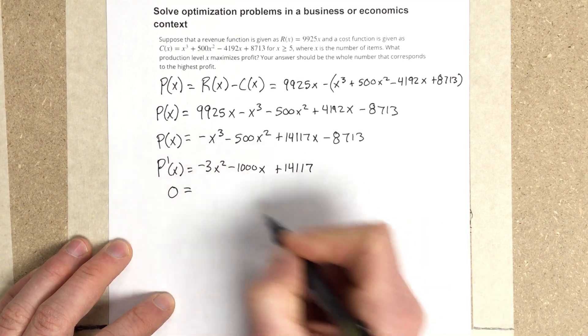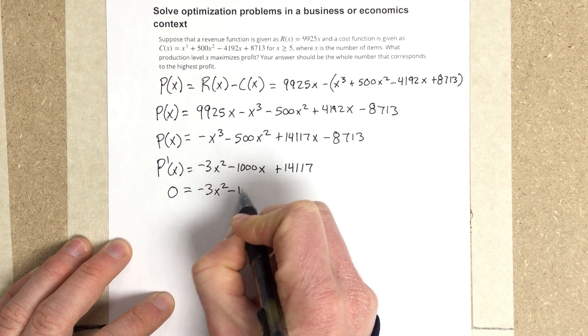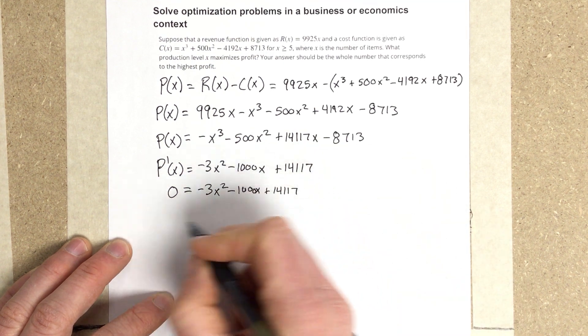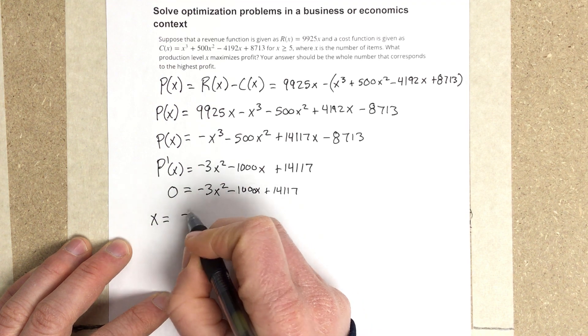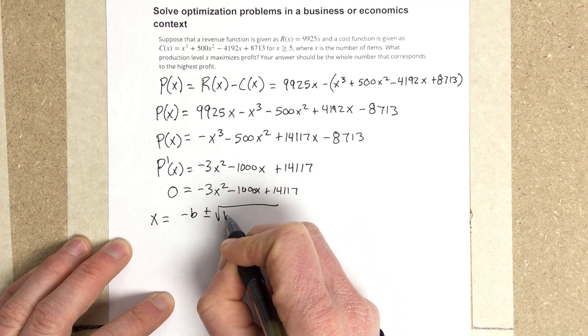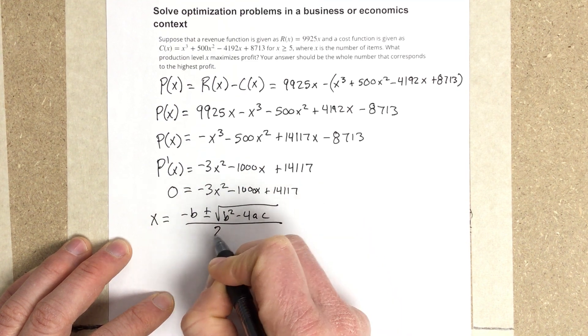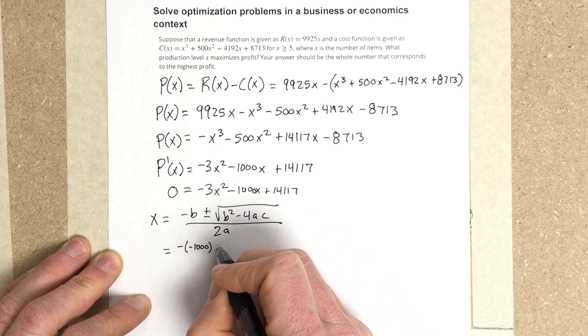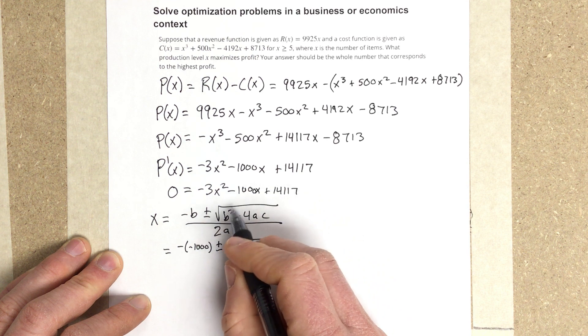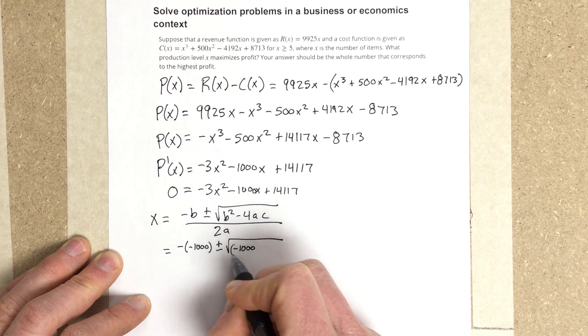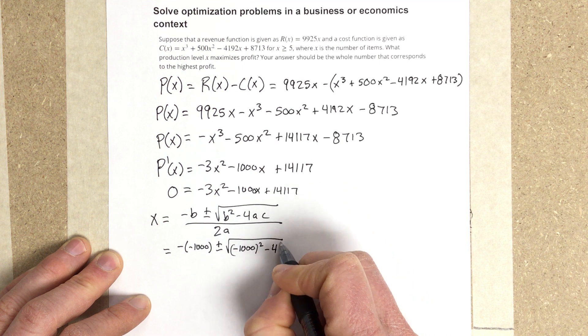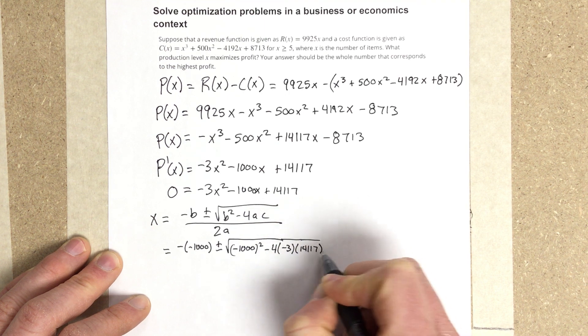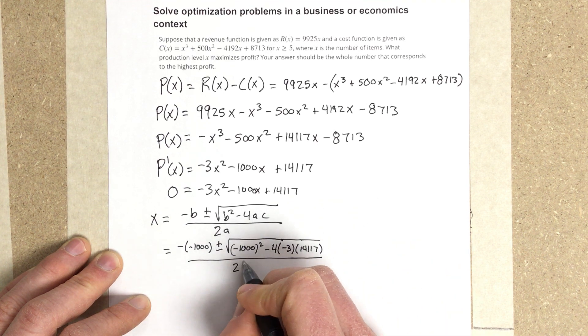Let's set it all equal to zero, and we end up with needing to use the quadratic formula here. So x, which remember x is the number of items, is going to equal -b ± √(b² - 4ac) all over 2a. So we get -(-1,000) ± root, b² would be (-1,000)² minus 4 times a, which is -3, times c, which is 14,117, all divided by 2 times -3.